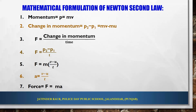Now let's look at the mathematical formulation of Newton's second law. Momentum is P equals MV. If an object starts at velocity U and changes to velocity V, then change in momentum is P2 minus P1, which equals MV minus MU. From the second law, F equals change in momentum divided by time, and substituting the value of acceleration we get F equals MA.